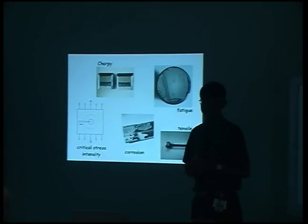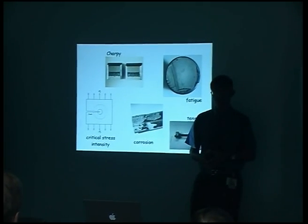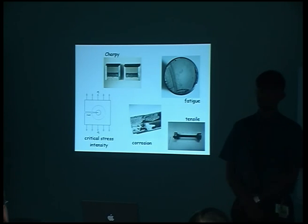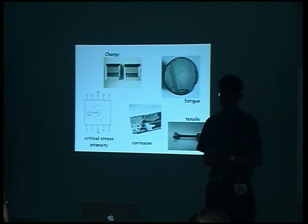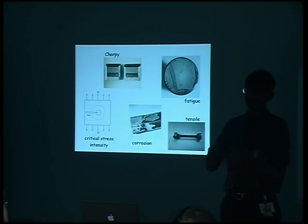We can measure them, we can use them in design, we can interpret what's going on. But we cannot predict them. There is nobody in the whole world who can predict those properties if I give you a steel composition, a heat treatment, etc. For no material can you predict these properties. So we can measure them, characterize them, use them in design, and all of that is extremely useful. We can understand mechanisms, but we cannot predict those properties. So it's very dissatisfying. You can calculate microstructure, do a lot of work to do that, and then you're stuck — you can't calculate the most important properties other than yield strength, because we have nice dislocation theory and so forth.